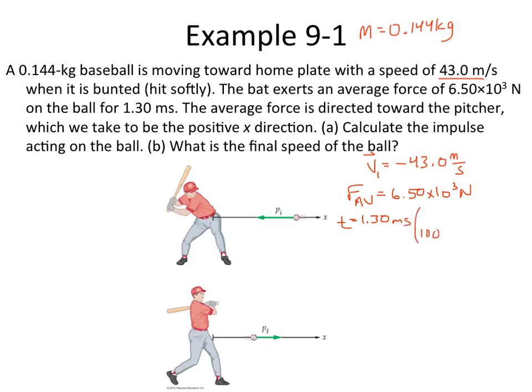Well, 1,000 milliseconds equals 1 second. So we divide that by 1,000, and that's going to be 1.30 times 10 to the negative third seconds right there. That's a negative third. Sorry, that's all kind of crammed in there, but it's a very short period of time, 1.3 thousandths of a second.